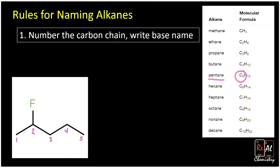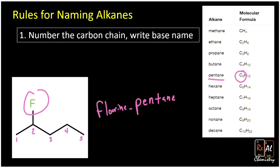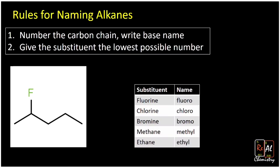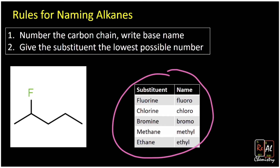Five carbons means we look up the alkane chain lengths and find that five carbons corresponds to pentane. But it's not just regular pentane because we have fluorine on it. We could write 'fluorine pentane,' but two problems: fluorine seems long and ugly, and we don't know where the fluorine is. So we use the numbers we just drew. This brings us to rule two: always give the substituent the lowest possible number.